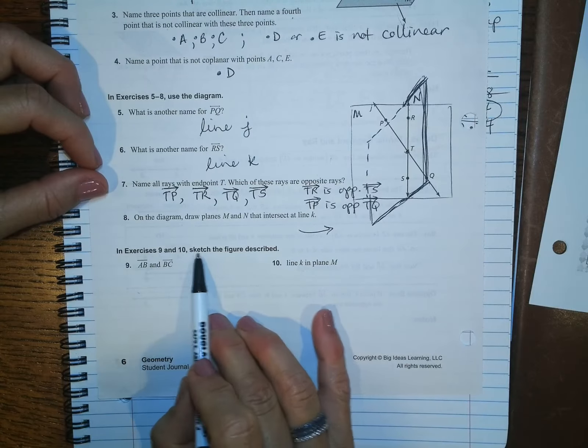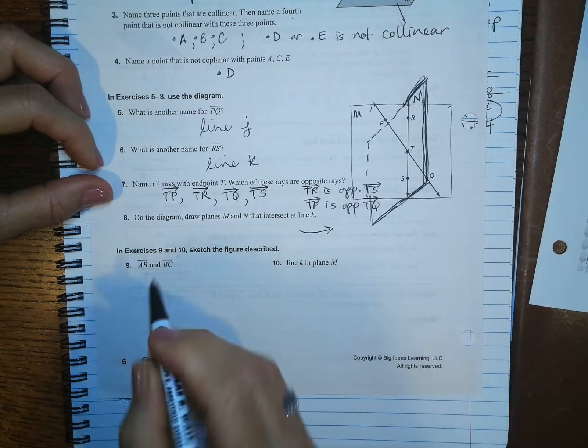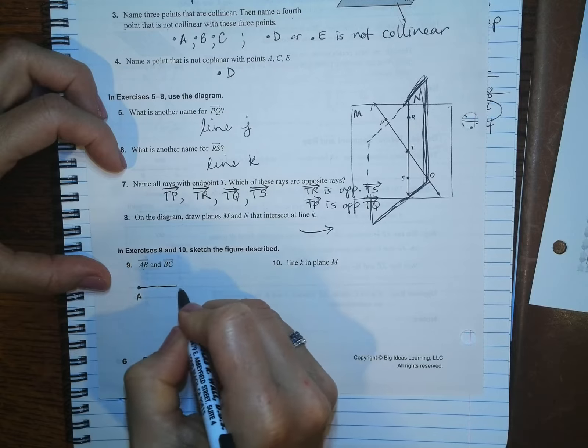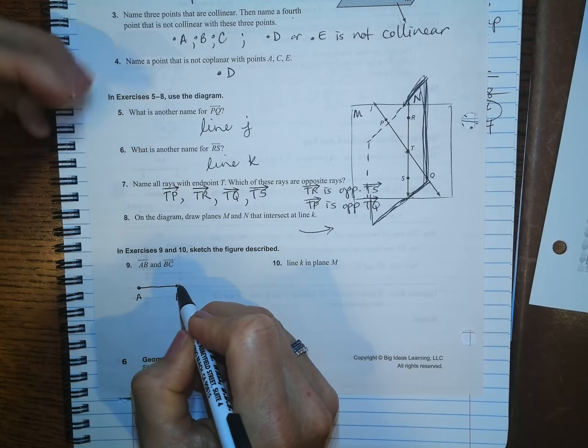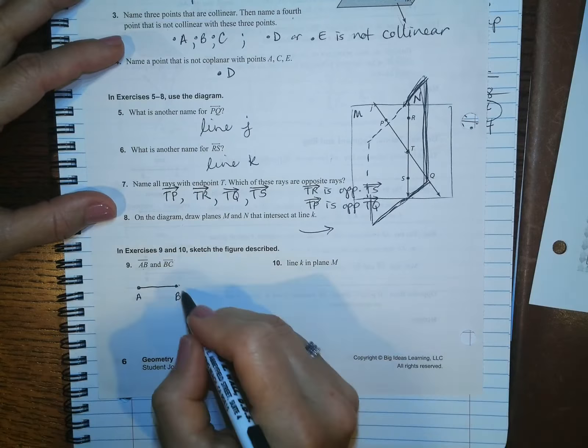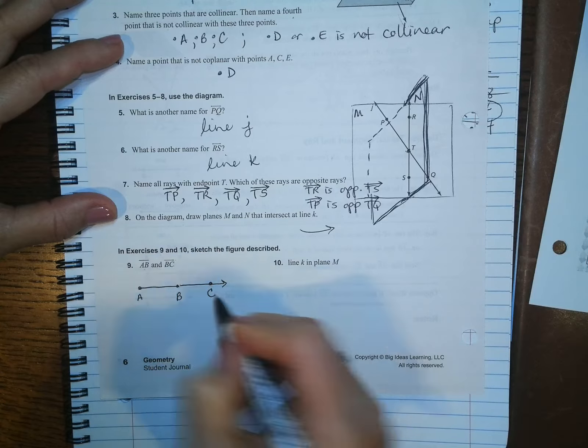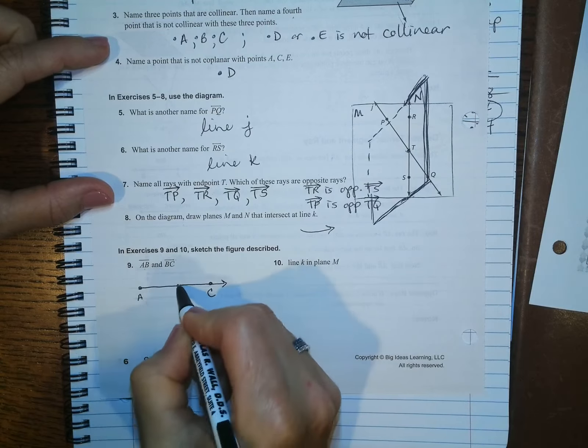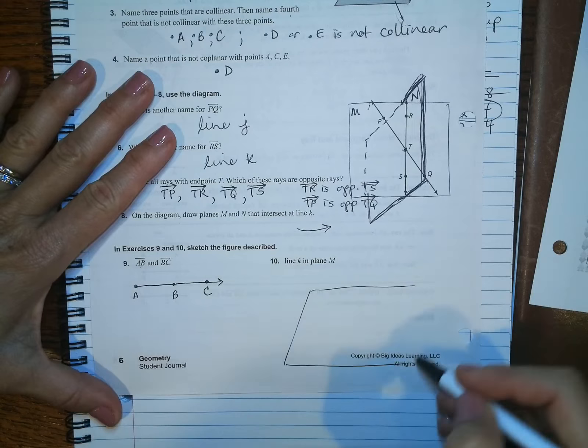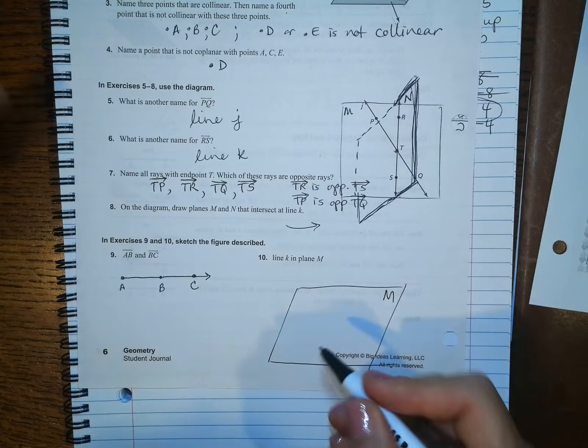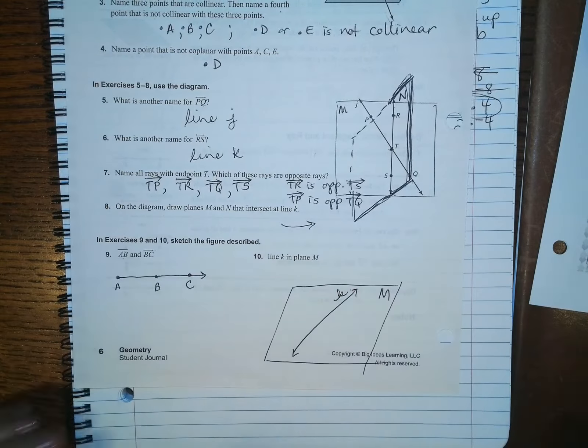And then last, sketch the figure described. I want a segment AB. There's no arrows. And, okay, so segment AB. And then BC is a ray. So you can continue from here in any direction. Okay. I'll just continue like this so that C is here. There's segment AB and there's BC. And I want line K and plane M. So a plane always looks like this. I'll label it M. And I've got a line right in it. So it looks like it's in it. And I label it with a little K.